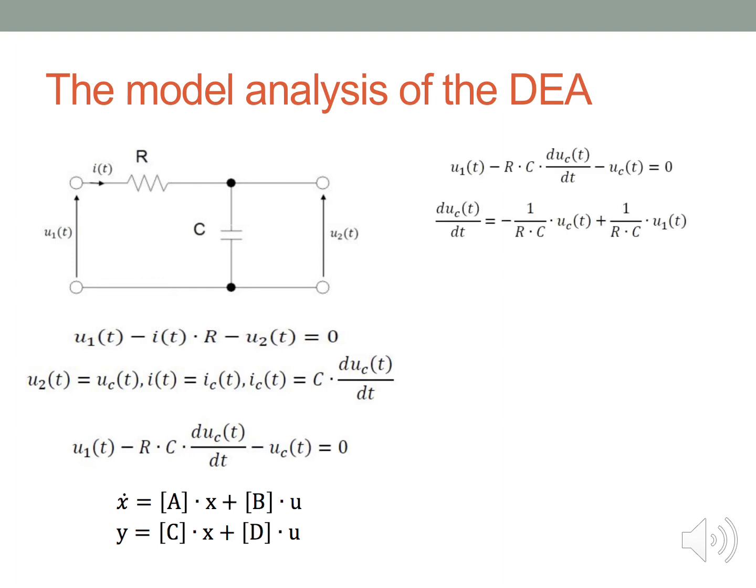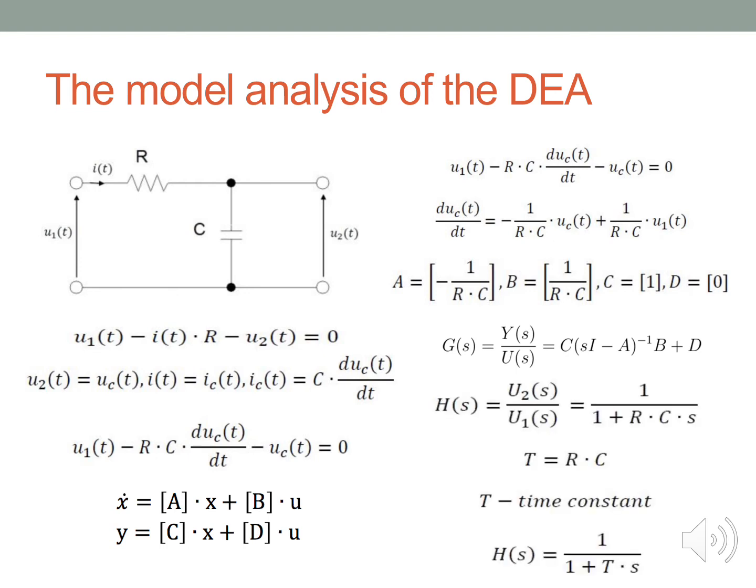The general form of a state-space representation equation is the following. Where A represents state matrix, B is the input matrix, C is the output matrix, and D is the feed-through matrix. From the formulas above, we can get the value of the matrix A, B, C, and D. Then, from the formulas of the transfer function, I take into account the value of the matrix A, B, C, and D. Then I can get the transfer function from U1 to U2, where τ equals RC is the time constant.